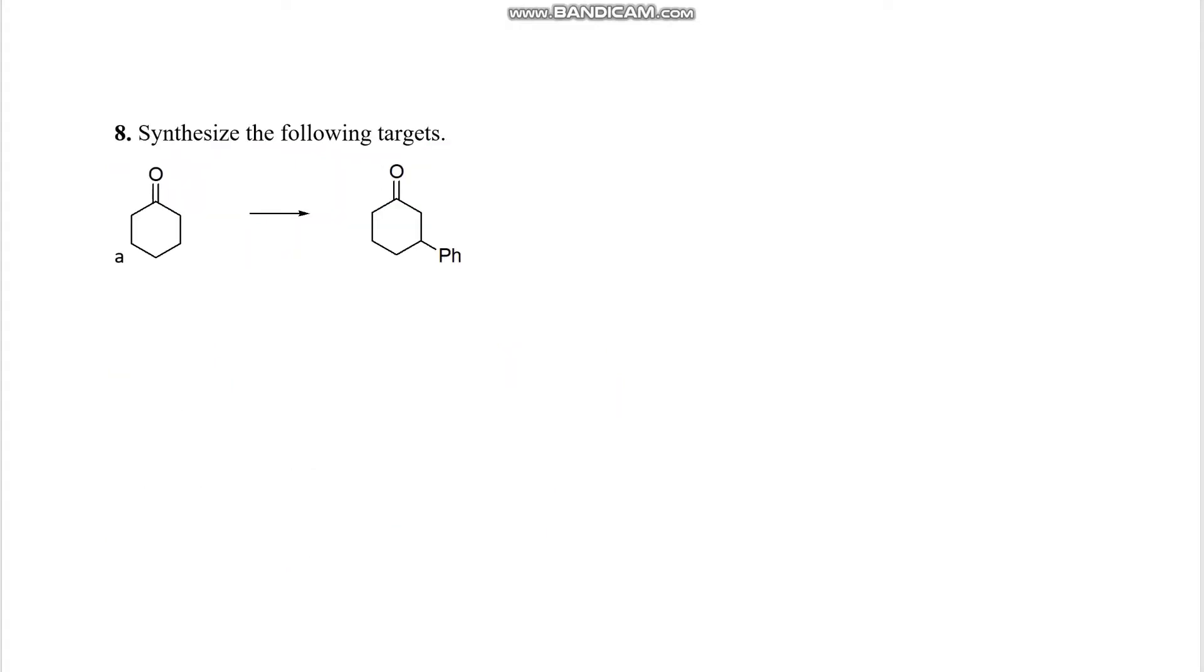So number eight, we are going to synthesize the following targets. So for A, we're going to start with some H3O, BR2, some bromination, going to add some pyridine to eliminate that. And we're going to add a cuprate to pop on that phenyl group.